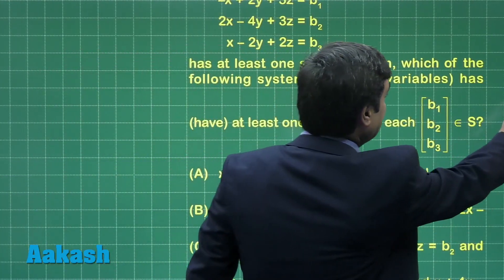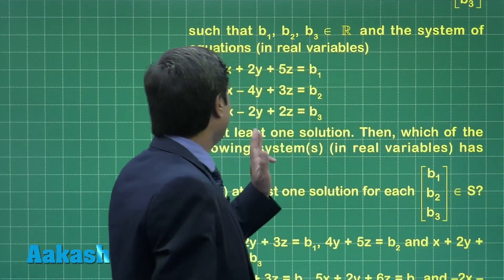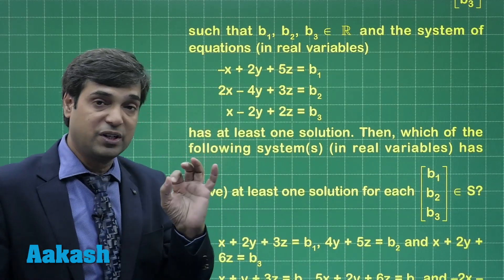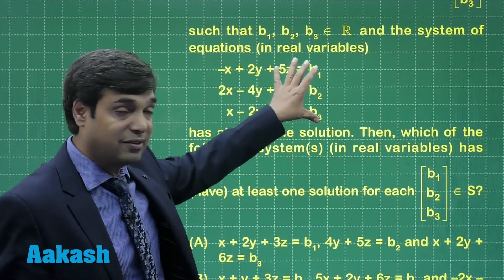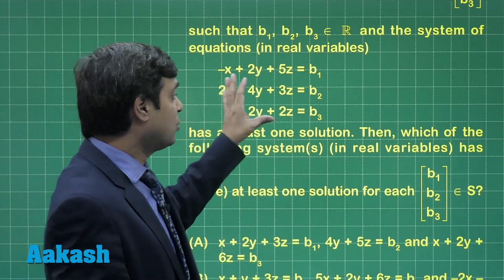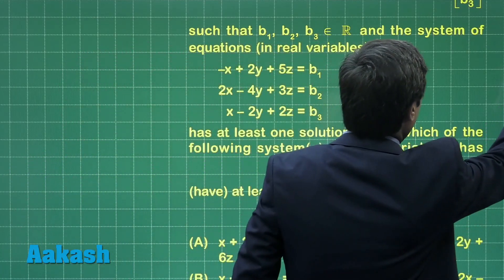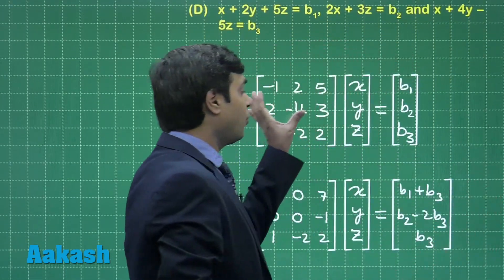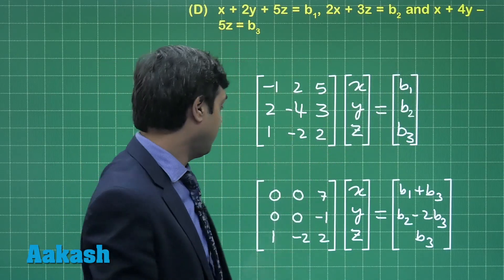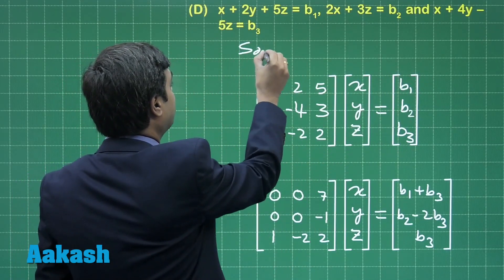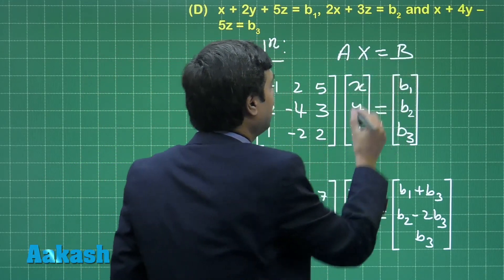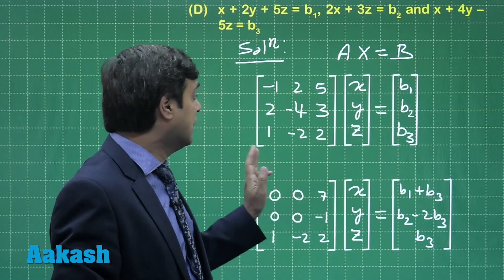Starting with the given data, which involves minus x plus 2y plus 5z equals b1, and so on — 3 equations are given. Let us solve these three so that we can say this system of equations has at least one solution. We use the matrix method, writing the coefficients in Ax equals b form.